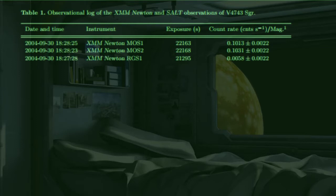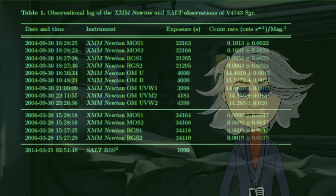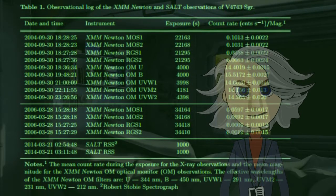In the end of September 2002, a nova was discovered in Sagittarius, called V4743 Sagittarius and classified as spectral class F2.